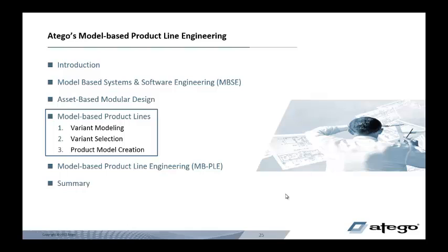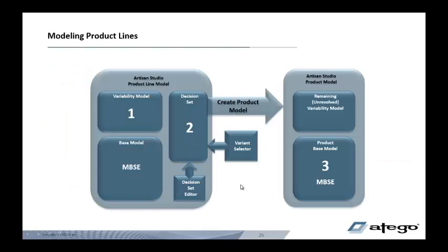Now let's move on to look at Otago's model-based product lines. We'll look at three areas: variant modelling, variant selection, and product model creation. This picture shows how they fit together. On the left, we have a product line model, or product family — which some people call the 150% model. This has a base model, which we extend with a variability model. Then we add decision sets using the decision set editor and the variant selector.